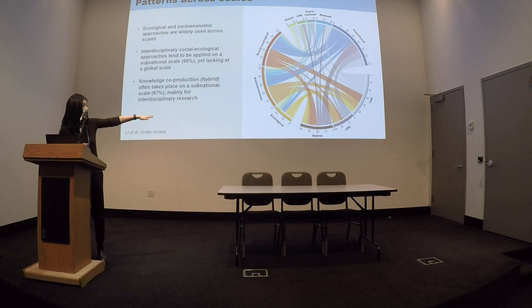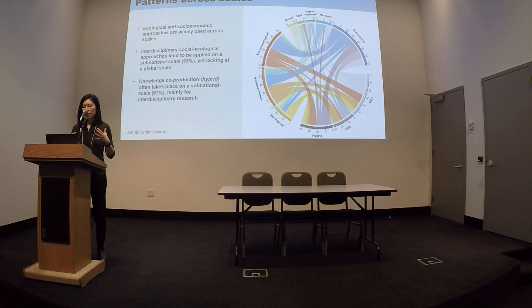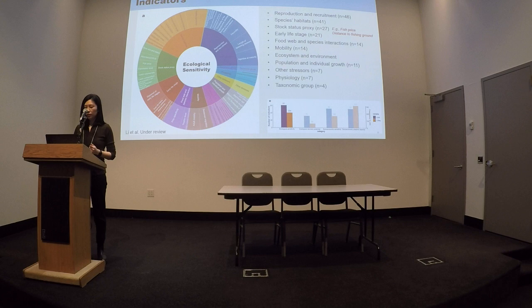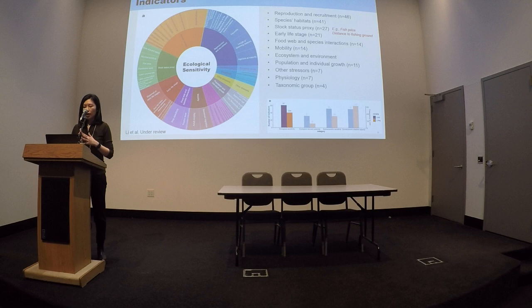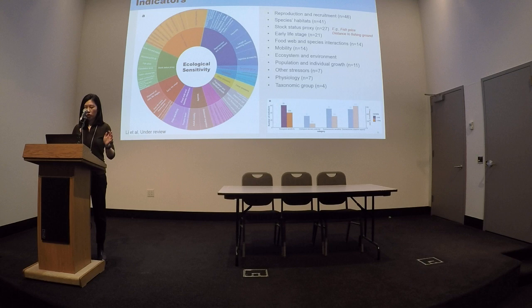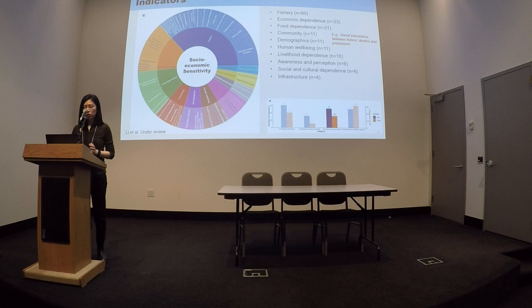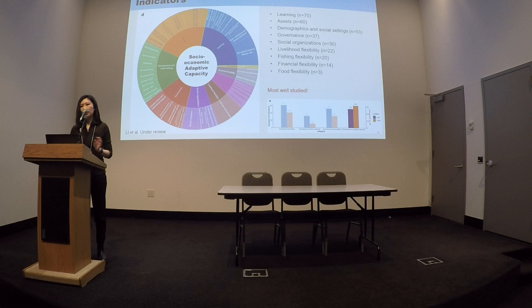Lastly, we look at knowledge integration — the hybrid approach shown in darker gray. Similarly, this type of activity takes place on a subnational scale, and there is a limited number of studies that understand social and ecological vulnerability for fisheries together. We also compiled all the indicators used to understand vulnerability for fisheries, categorized into four domains: ecological sensitivity, ecological recovery potential, socioeconomic sensitivity, and adaptive capacity.